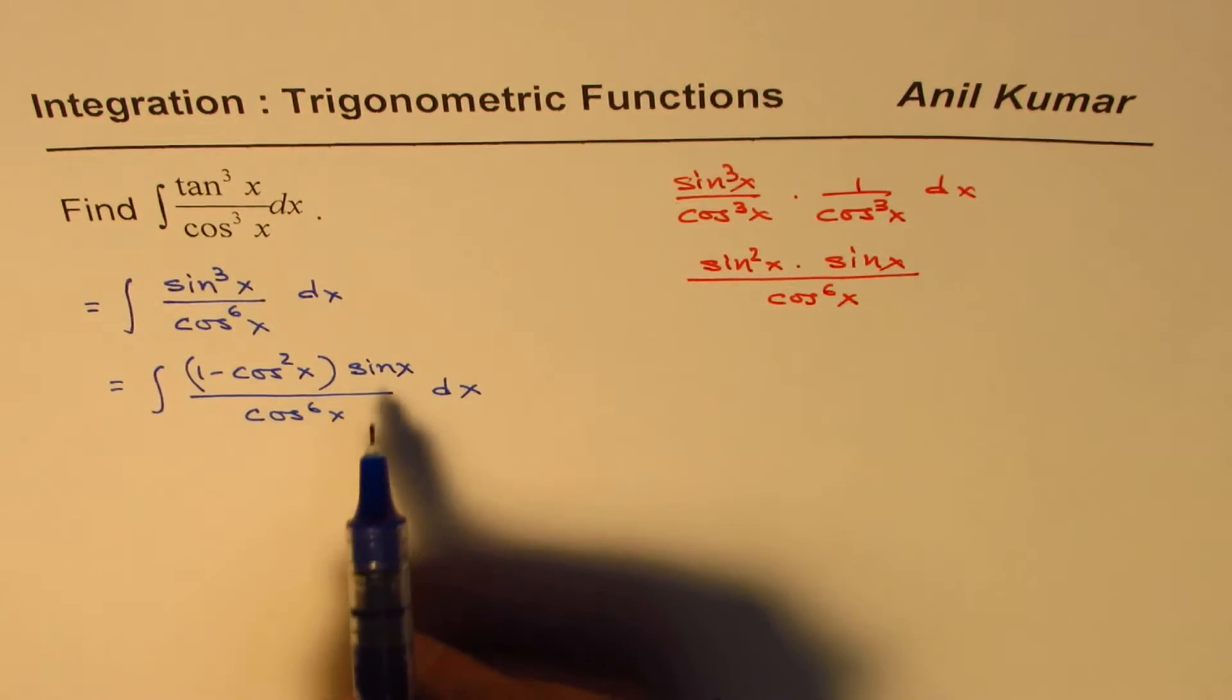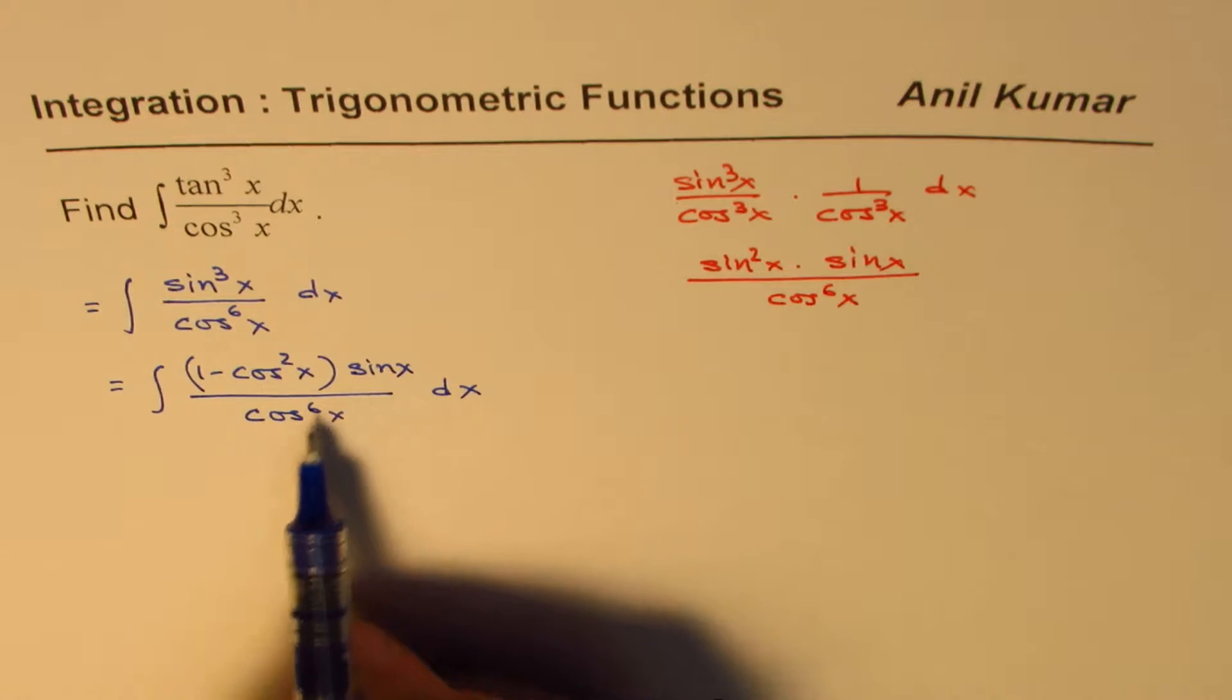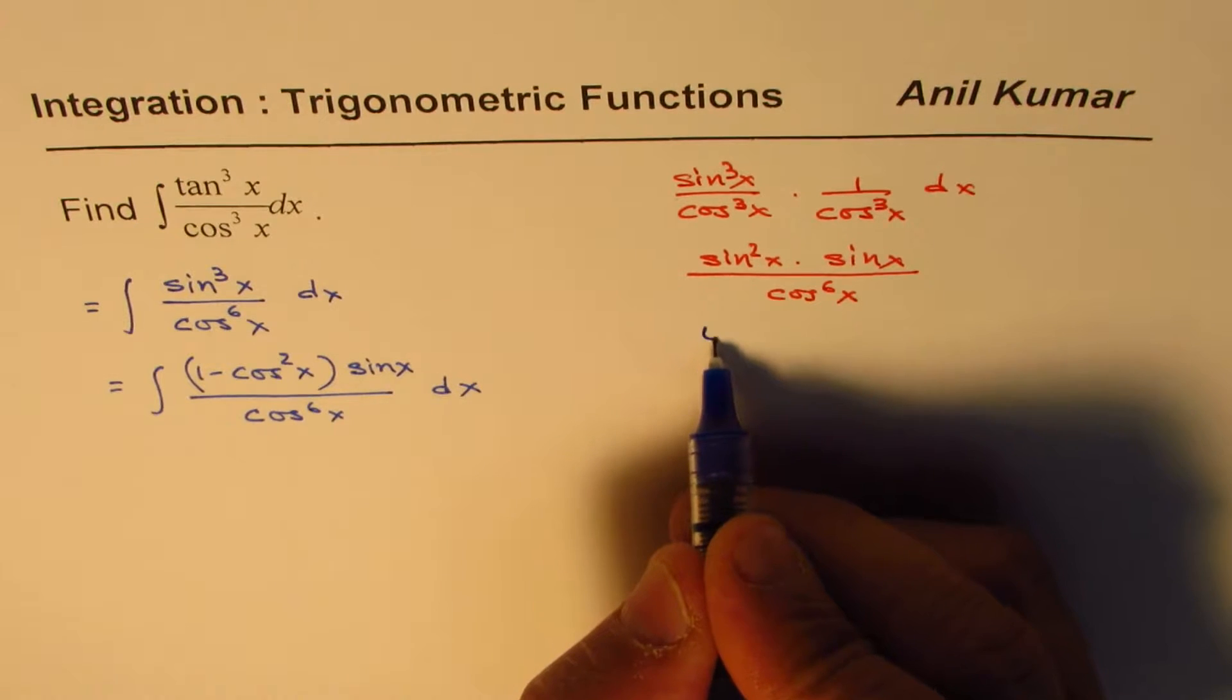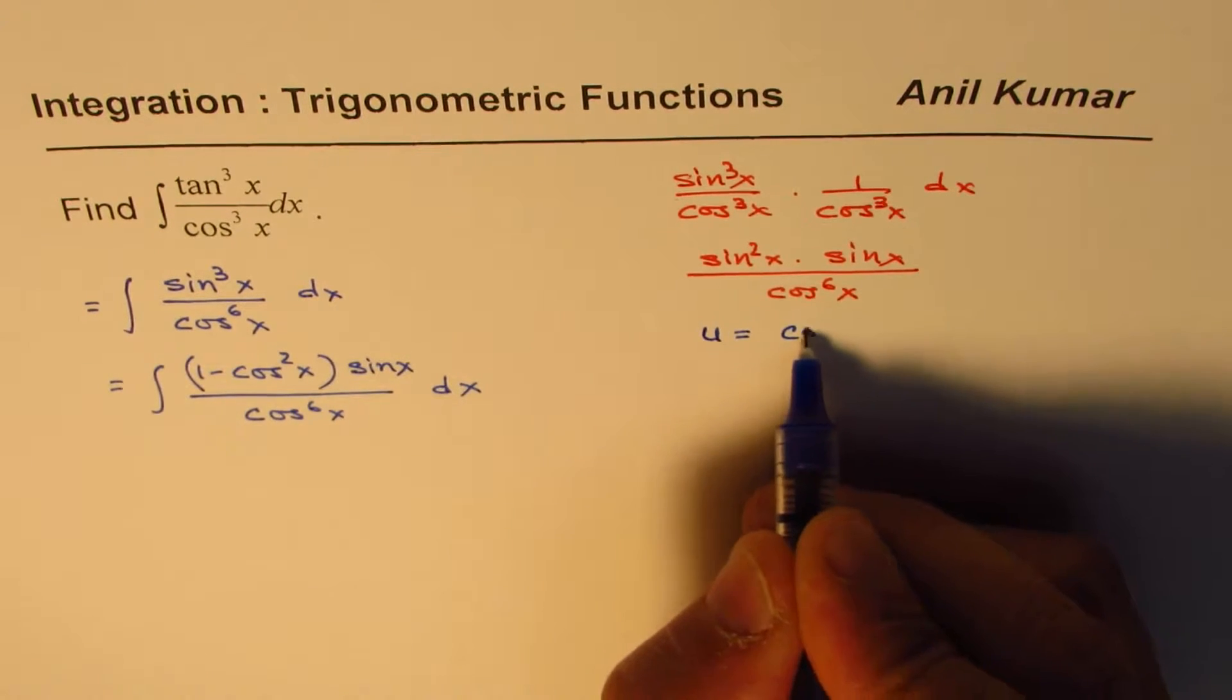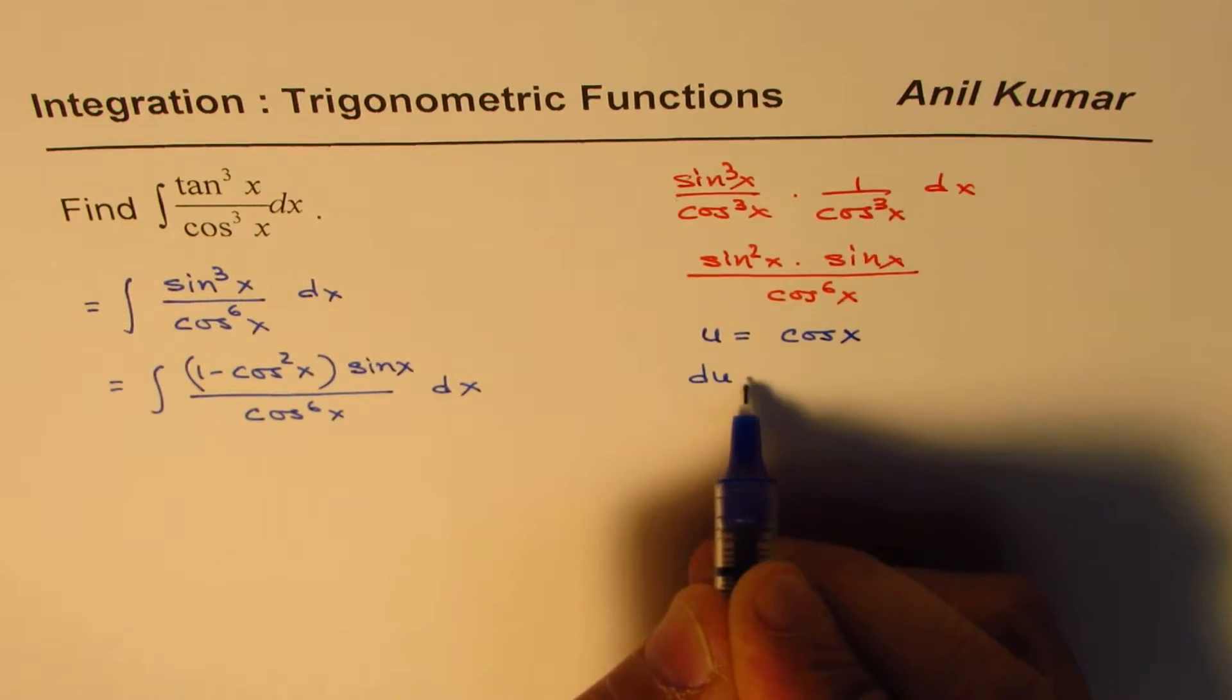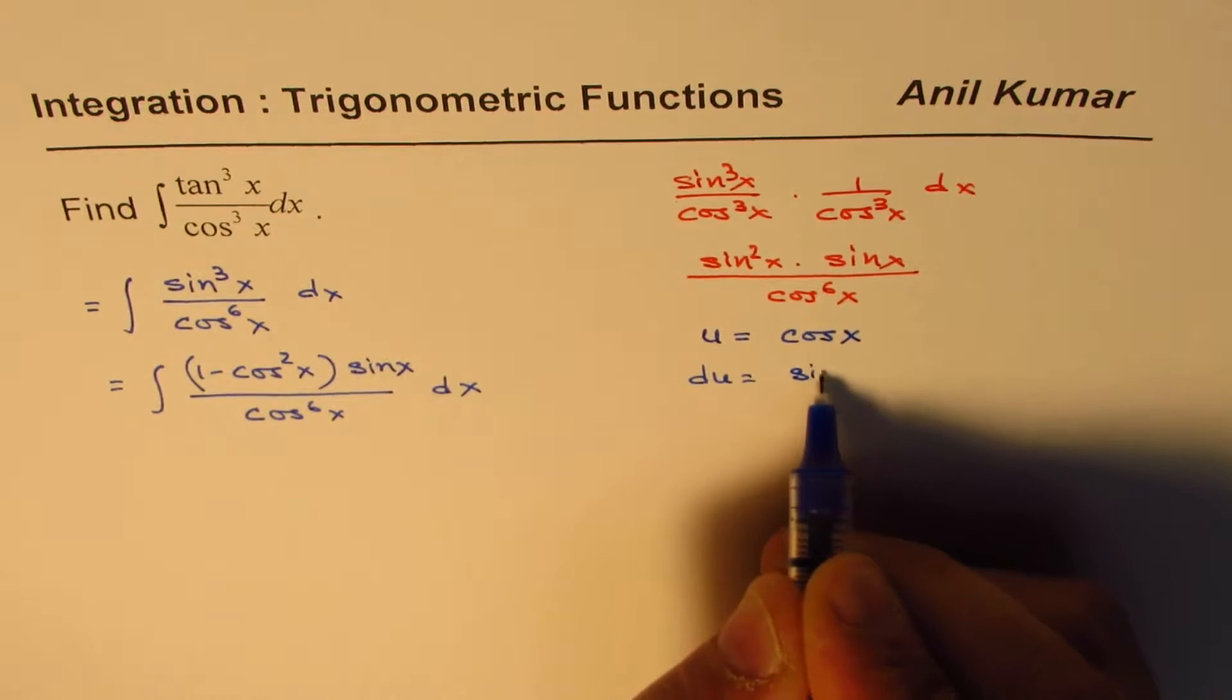Now at this stage, we have sine x here, which is the derivative of cosine x, so we can make a substitution. A good substitution would be u equals cos x. So du equals sine x dx.